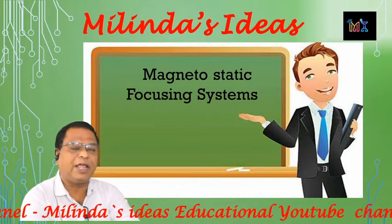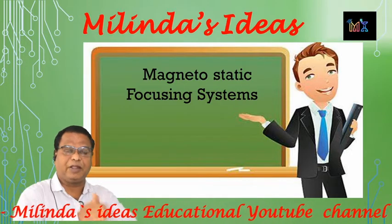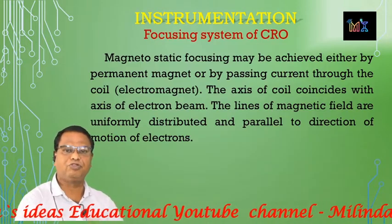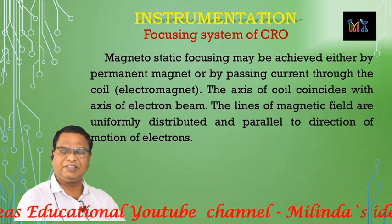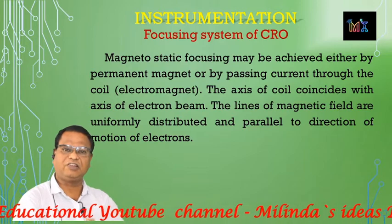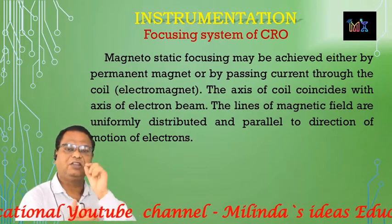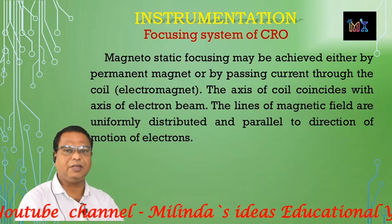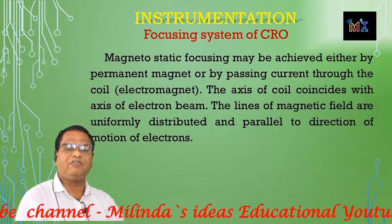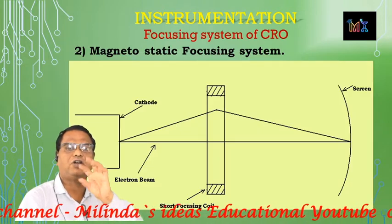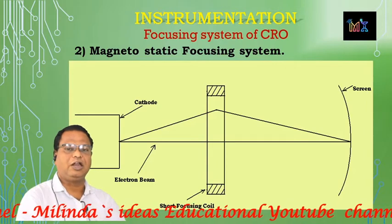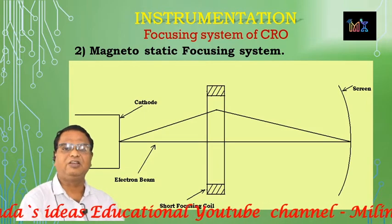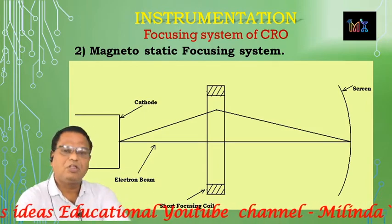In the magnetostatic focusing system, a magnetic field is used. Two types of magnets are used. The first type is a permanent magnet, which produces a fixed permanent magnetic field. The focusing remains fixed and is adjusted by the manufacturer. The second type is an electromagnet, in which the strength of the magnetic field can be controlled by the intensity of current applied to the coil, as well as the number of turns.